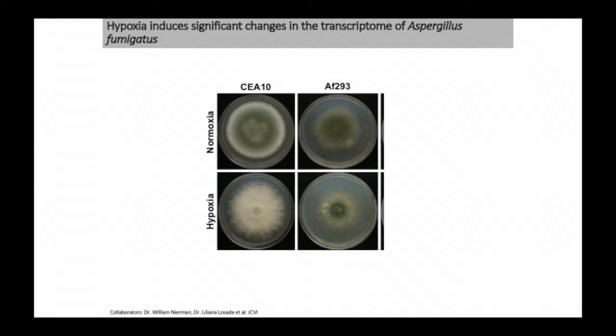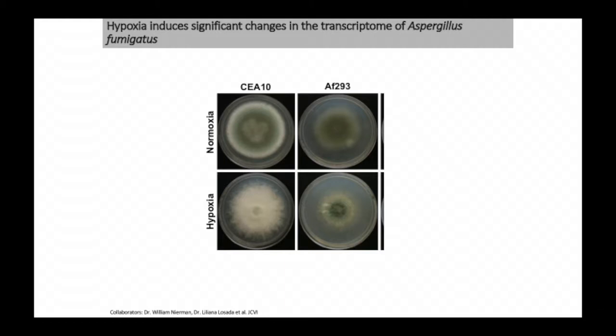We've done transcriptomics, proteomics, and metabolomics approaches. I also want to make the point — which has come up a lot at this meeting — that not all Aspergillus fumigatus strains are the same. They respond quite differently to low-oxygen conditions. Two commonly used strains in laboratories across the world are CEA10, from the Pasteur Institute, and Af293, from Manchester and David Denning's group. These strains show dramatic morphological differences in response to low-oxygen conditions, which does impact infection outcome in animals.